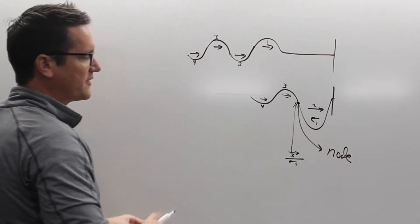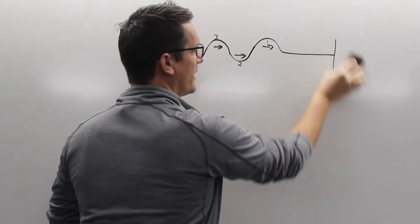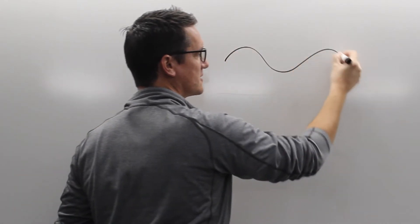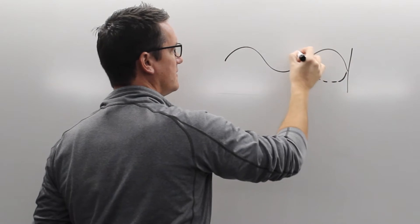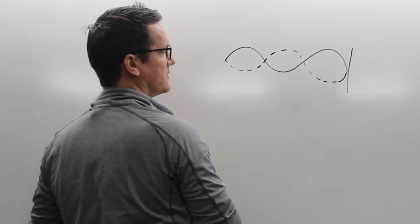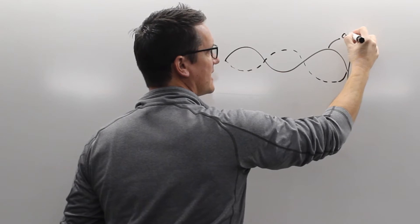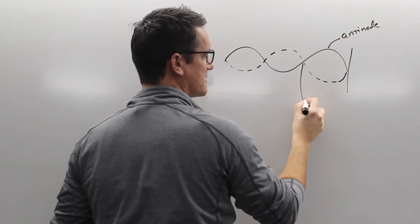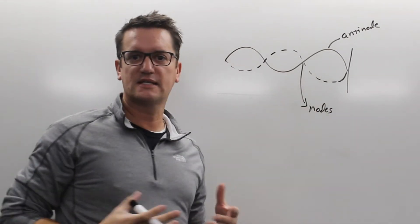So what we end up with is a standing wave — a wave that has constructive and destructive interference. We end up with something that looks like this: here's my wall, and then the wave goes like this. These big displacement points are called antinodes, and these stationary points are called nodes. This is a standing wave.